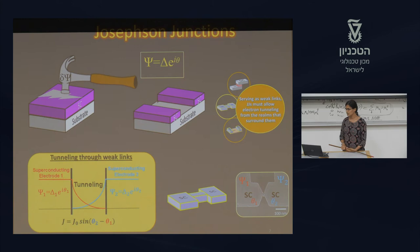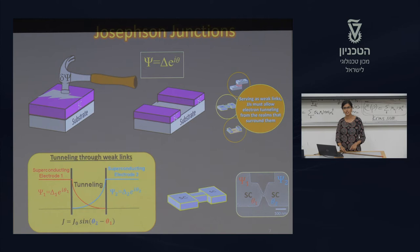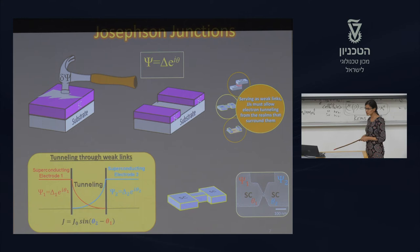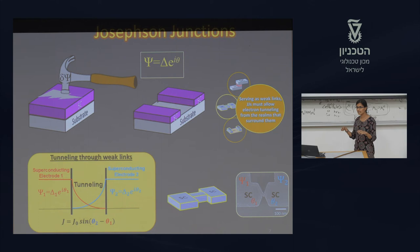Another approach is the Josephson junction. What are Josephson junctions? We take a superconducting material and break it into two. One way is to introduce an oxide or insulating layer between two superconductors to achieve a weak link. We can also thin the material between two superconductors, or introduce a gap — all of these create a Josephson junction.